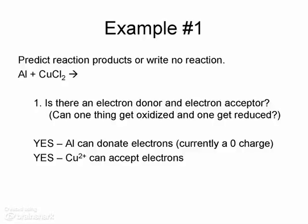Let's start with step one. If our reactants are aluminum and copper chloride, we have copper 2+ ions present. We also have aluminum metal. So aluminum can donate our electrons, and copper 2+ can accept the electrons.